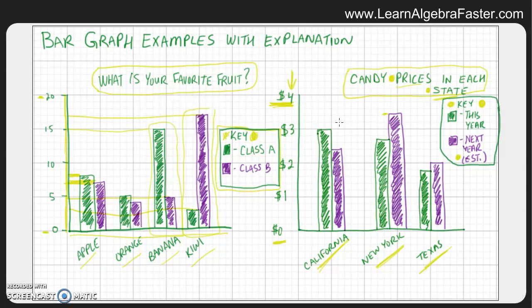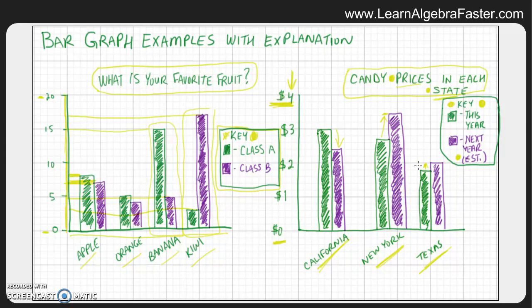For a given candy, it looks like next year prices are going to go down in California — from three dollars this year to about two dollars and forty cents next year. In New York the prices are going to go up, and in Texas they'll stay pretty much the same but go up just a little bit. This example shows how you can find data by measuring the differences between two things across different groups.